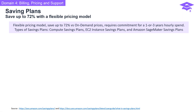Let's take a deep look at savings plans. You can save up to 72% with this flexible pricing model compared to on-demand prices. Savings plans require a commitment for either one or three years of hourly spend, and there are different types to choose from: compute savings plans, EC2 instance savings plans, and Amazon SageMaker savings plans.